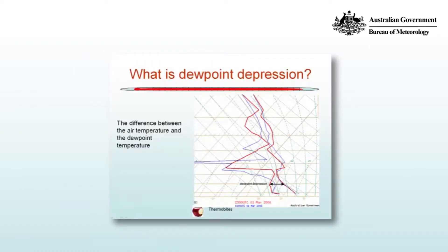Dewpoint depression is simply the difference between the air temperature and the dewpoint temperature. On an aerological diagram, as shown on the right, it's the distance between the two lines. Examining the trace for 23 UTC on the 1st of March 2006, you can see how the dewpoint and temperature profiles sometimes come close together, and at other times there's a very large distance — in other words, a large dewpoint depression.